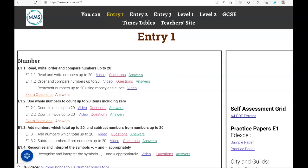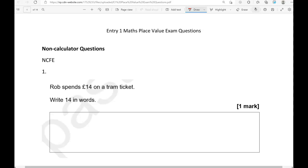In this video, we'll go through exam questions that cover the Entry 1 criteria: read, write, order and compare numbers up to 20. You can find them on the MarsPath.com website under Entry 1. There will be questions from different exam boards. We'll start with non-calculator questions and then move to calculator questions.